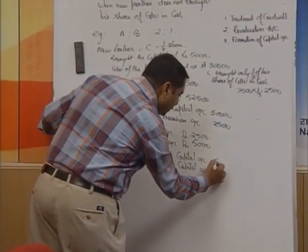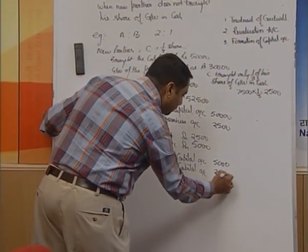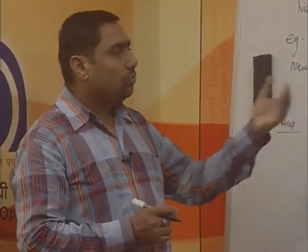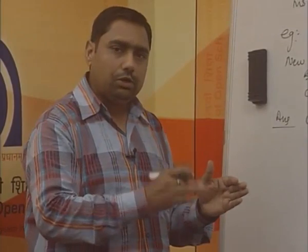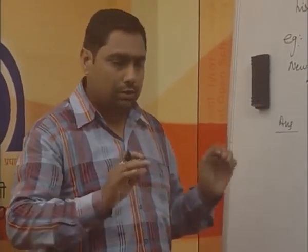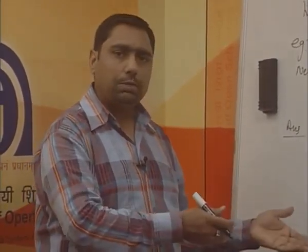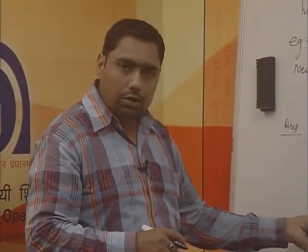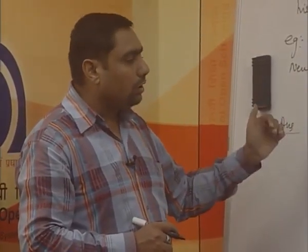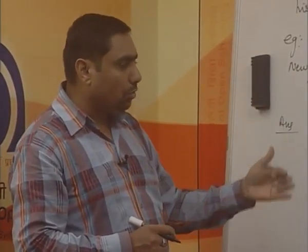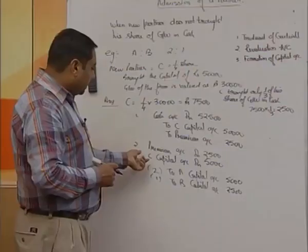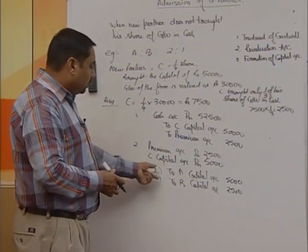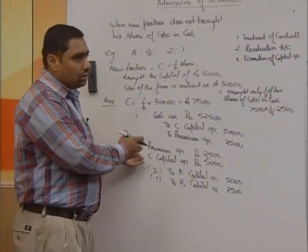So 5,000 rupees is given to A and 2,500 to B. To summarize: if goodwill is not brought, take the amount from capital or current account. If goodwill is brought in full, distribute it among partners in sacrificing ratio. If only a part is brought in cash, record that part as premium and take the remaining from the capital account, then distribute the total among partners in their sacrificing ratio.